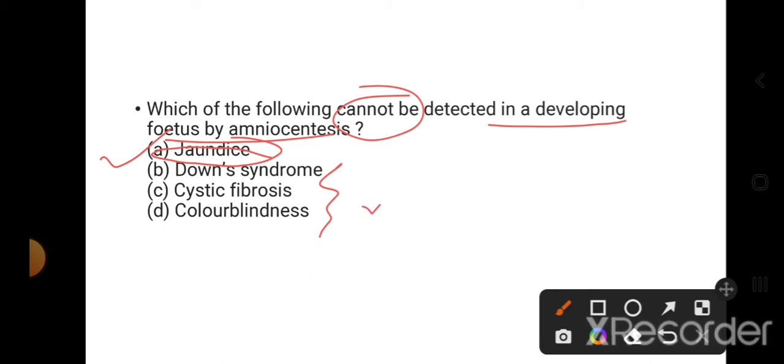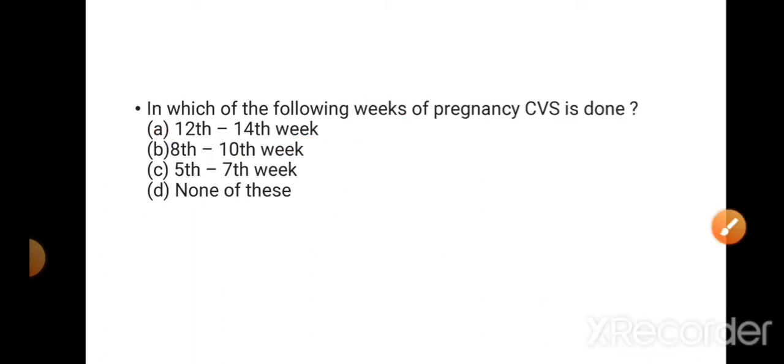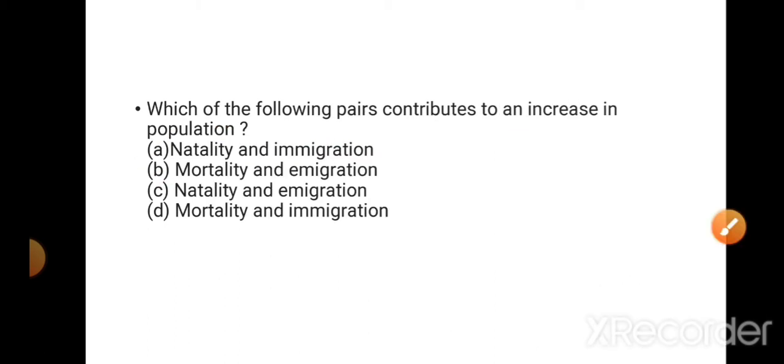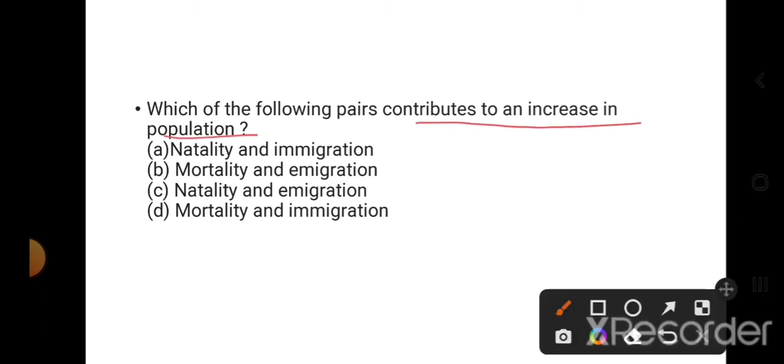In which of the following weeks of pregnancy is CVS done? CVS, chorionic villus sampling, is done at 8 to 10th week, in the first trimester. Which of the following pairs contribute to an increase in population? When there is natality and immigration. Natality means birth rate high, and immigration means movement of people into the population. So the correct option is natality and immigration.